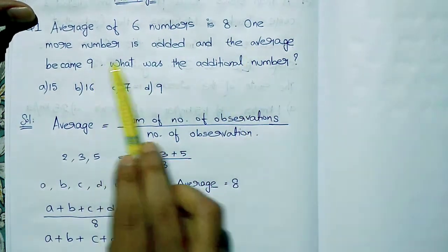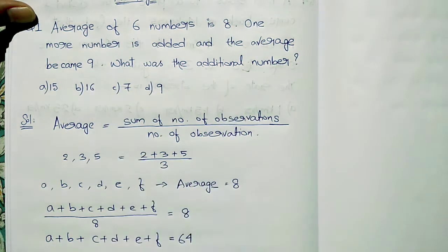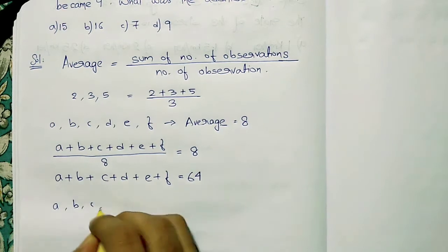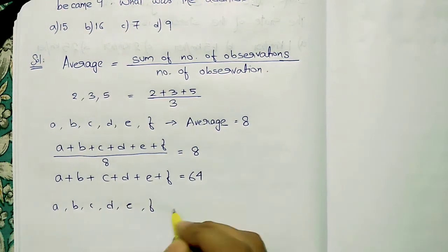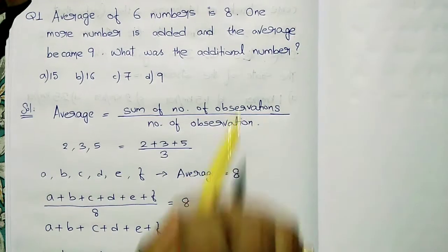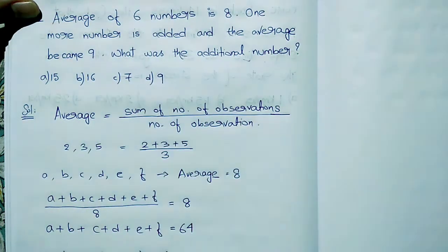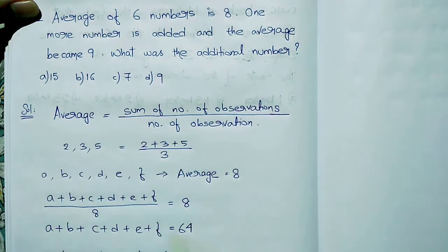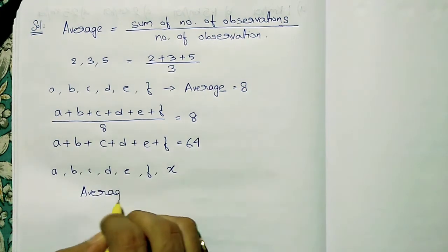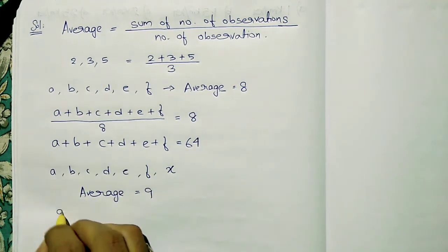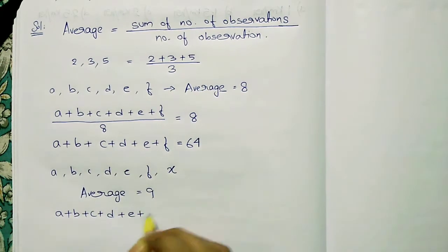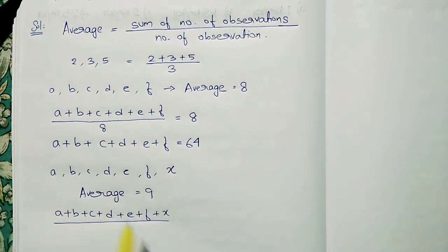Now what is said: one more number is added and the average becomes 9. So we include that additional number — a, b, c, d, e, f, and now we include x. So here the average becomes 9. Average equals a plus b plus c plus d plus e plus f plus x, divided by the number of observations, equal to 9.